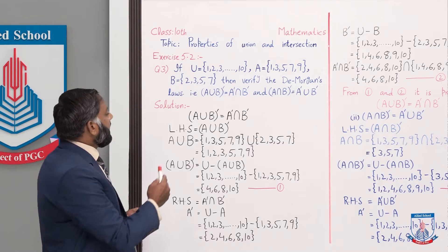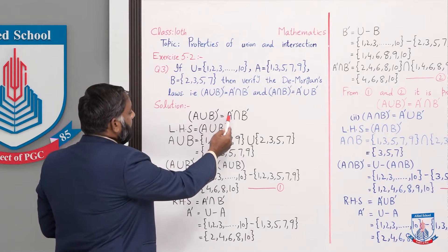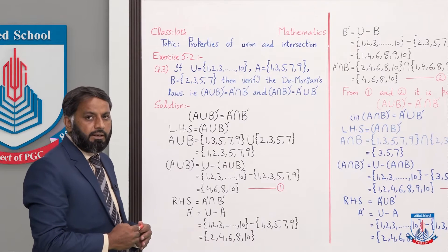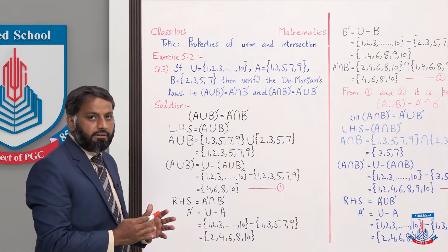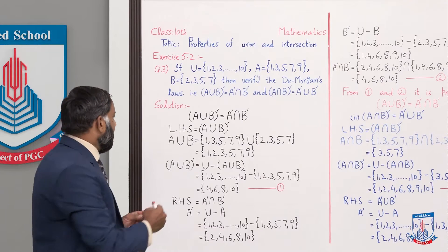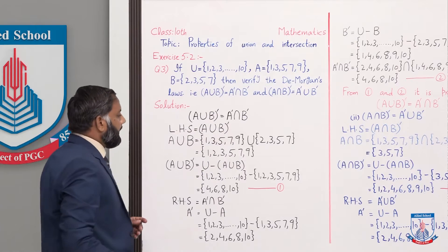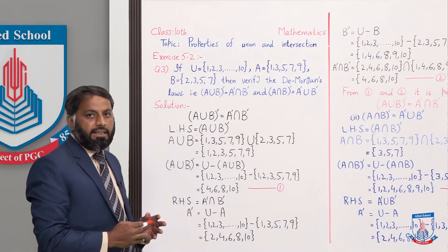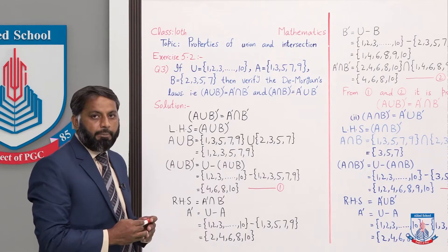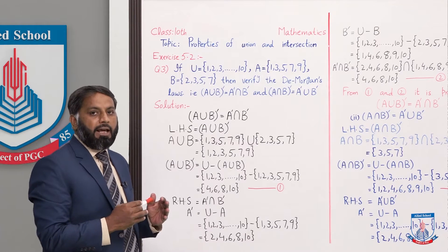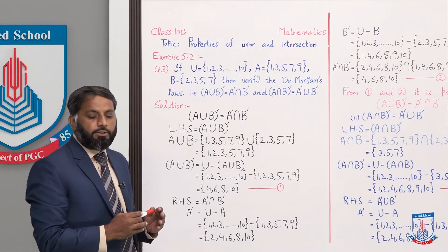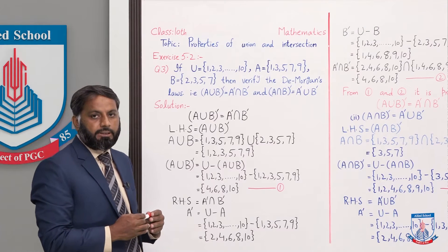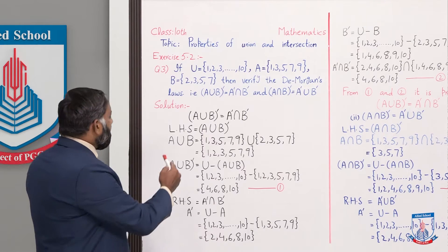Now we will do the first law: (A∪B)' = A'∩B'. There are two sides — left hand side and right hand side. First we will solve the left hand side, (A∪B)'. To find the complement of A∪B, first we need to find A∪B. As we have already studied, to find a complement we subtract that set from the universal set.